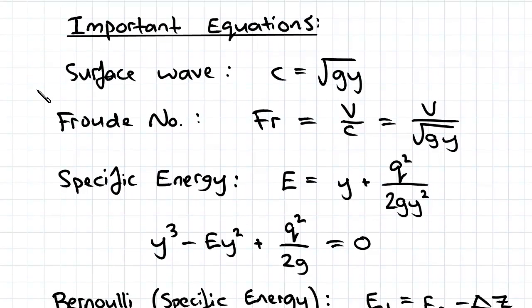The first one we looked at was the surface wave equation C equals square root Gy. Next we compared the surface wave speed to flow velocity in the Froude number equation, Fr equals V on square root Gy.